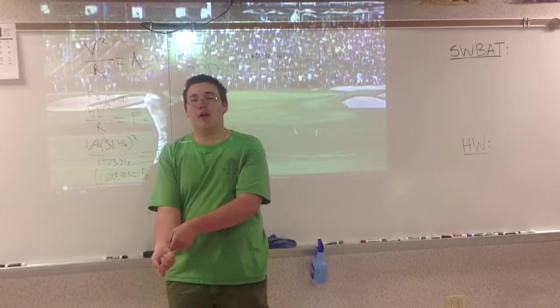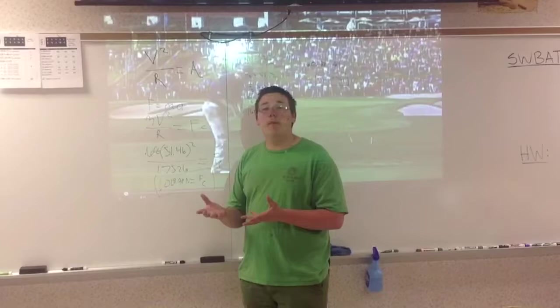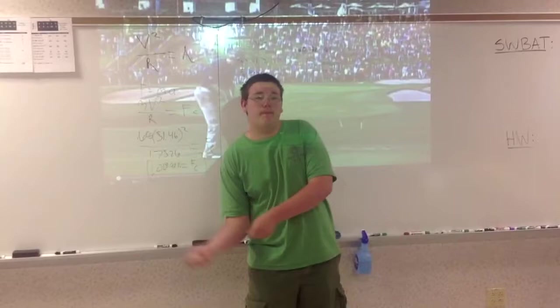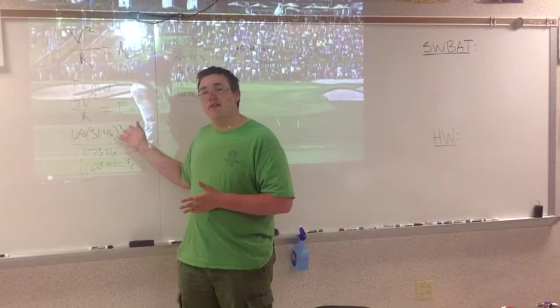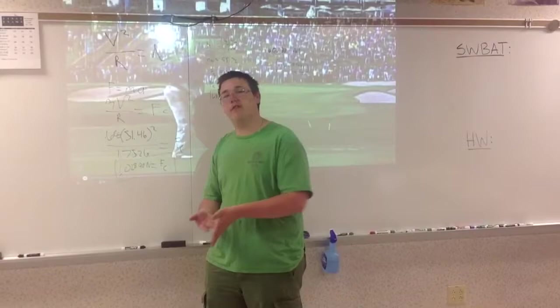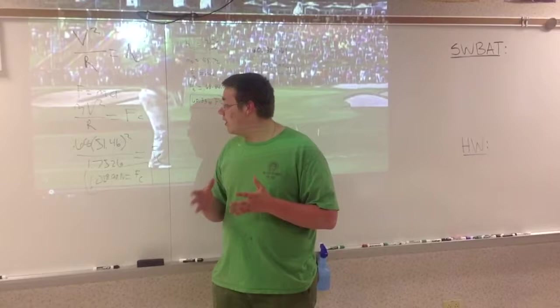So, we plug in numbers, 0.68, the approximate weight of the club, times 51.46, the approximate speed, thanks to the PGA, and we square that. And then we take that over the radius, which was his arm plus the club. And we end up with a total centripetal force of 1,028.99 newtons.